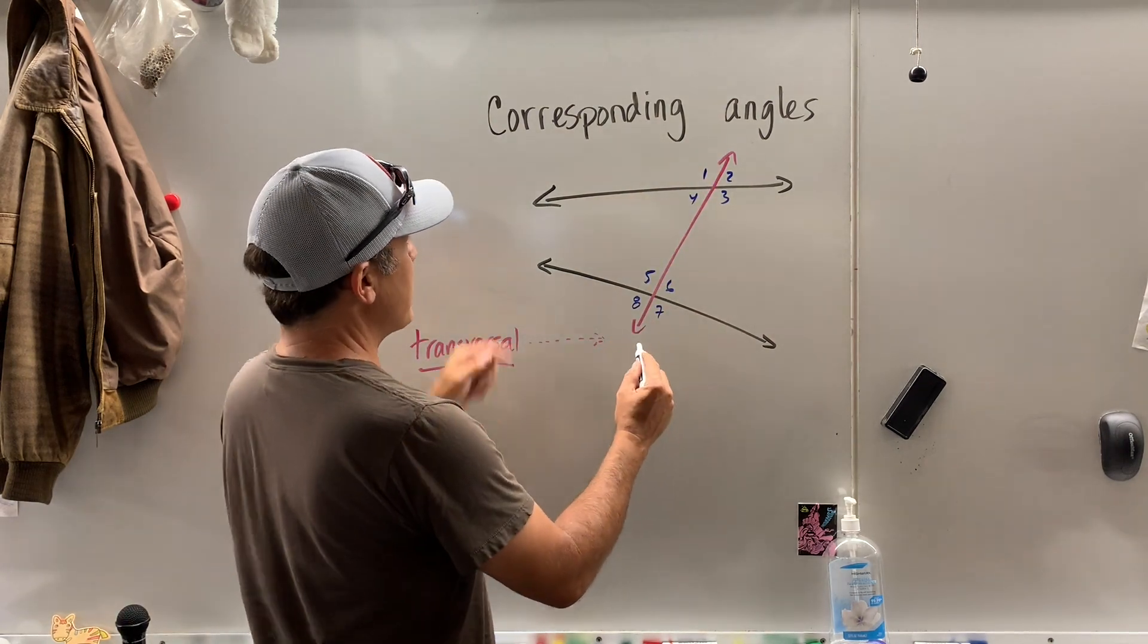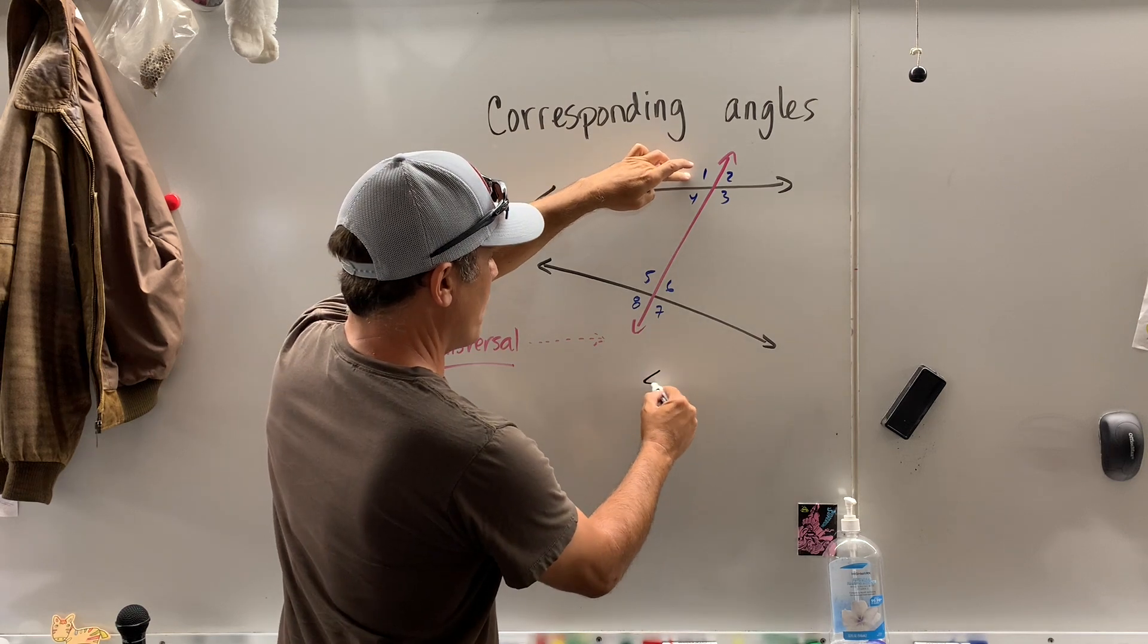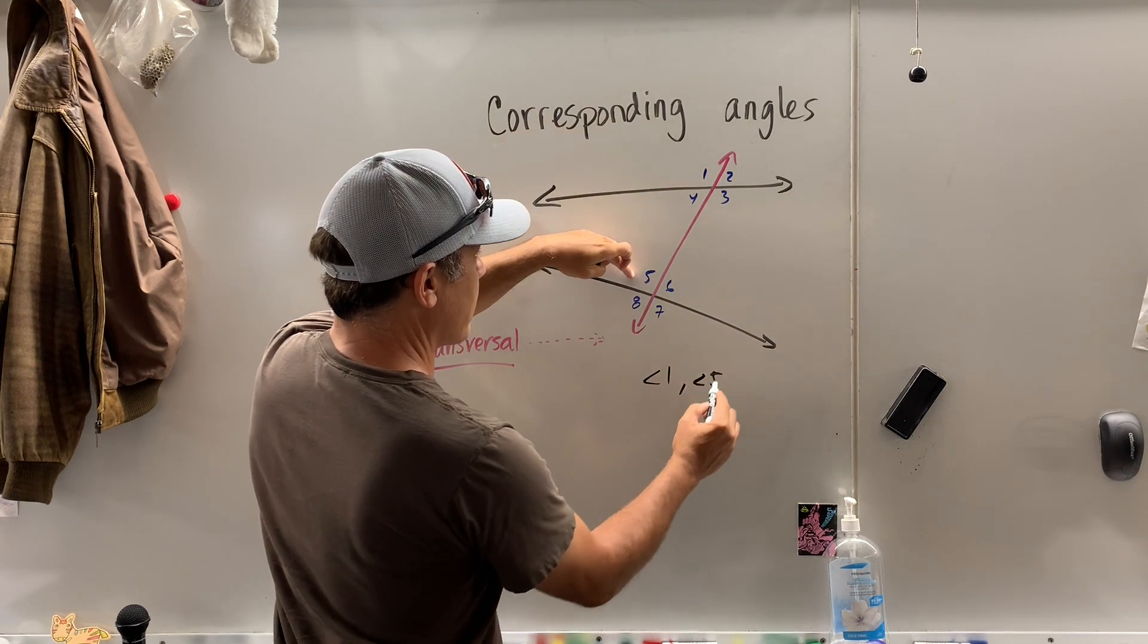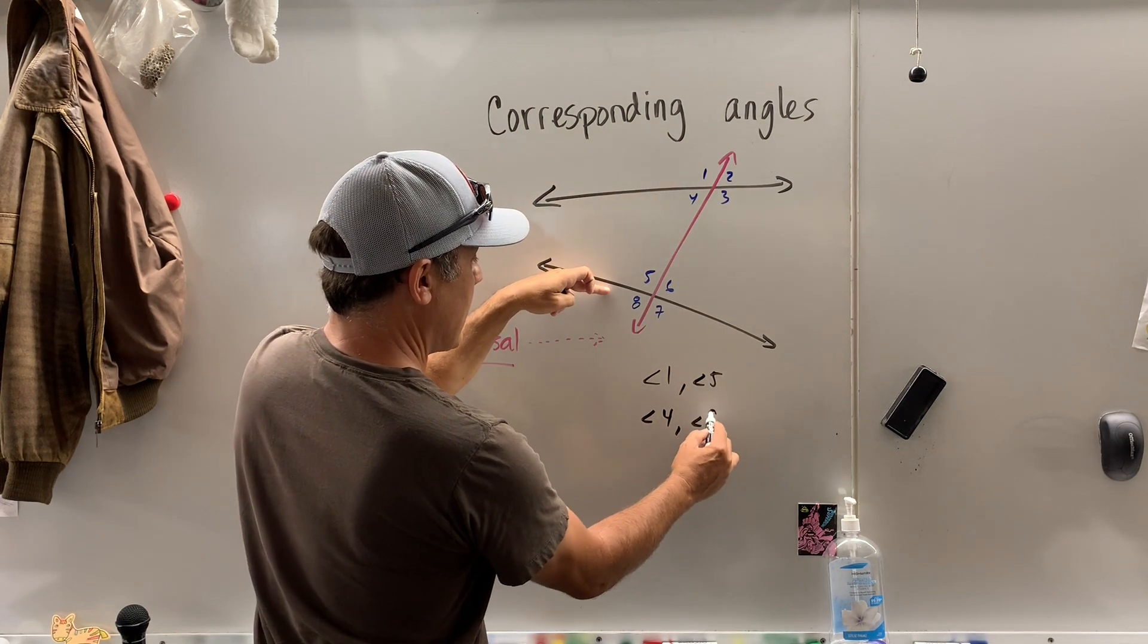So an example of corresponding angles would be angle 1 and angle 5. Another example, angle 4 and angle 8.